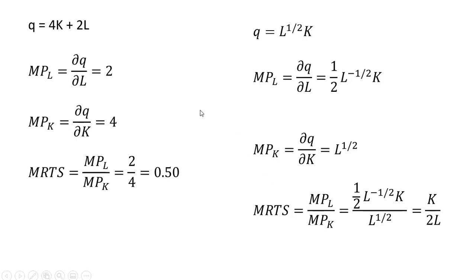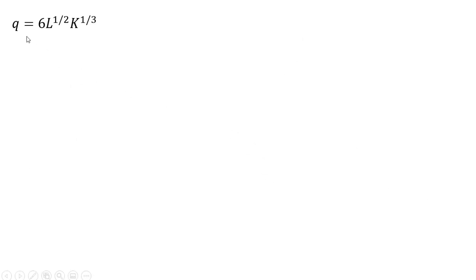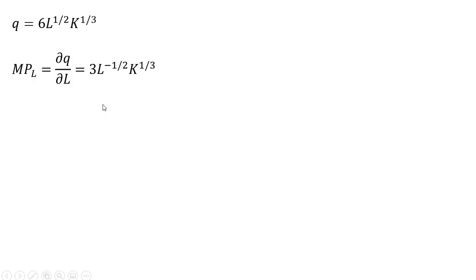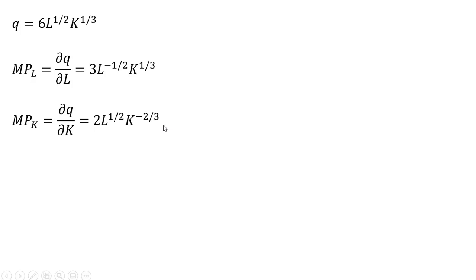Example 3. Here we have a slightly different looking production function. For the marginal product of labor, this 1/2 times 6 is where this 3 is coming from, and then 1/2 minus 1 leaves us with L raised to the minus 1/2 power. We don't do anything with the k term. For the marginal product of capital, this 1/3 times 6 is where this 2 is coming from. We don't do anything with the L term. Then k raised to the 1/3 power — we're going to subtract 1 from it, leaving us with k raised to the minus 2/3 power.